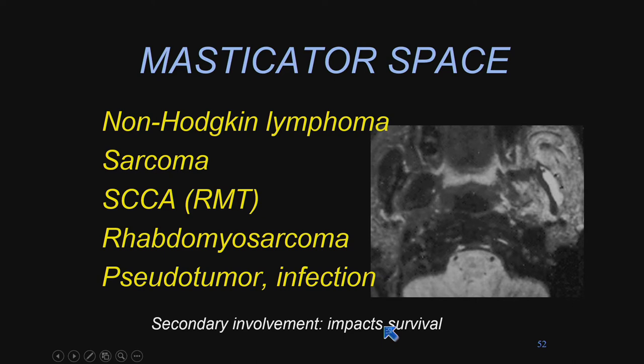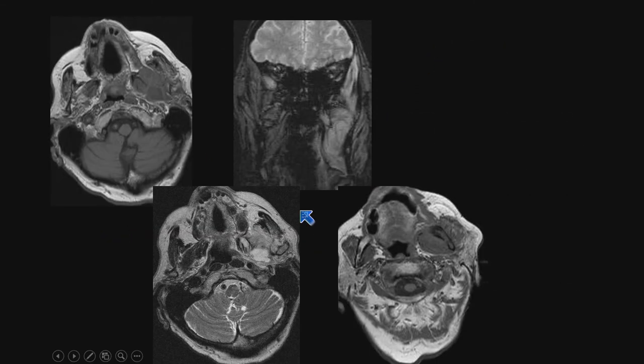In part because that third division of the fifth cranial nerve descends through the foramen ovale into the masticator space, you can have perineural spread from the masticator space to the intracranial compartment. Rhabdomyosarcoma occurs in young kids; squamous cell carcinoma in older adults.